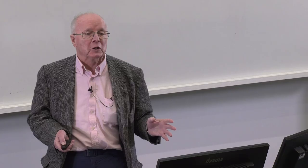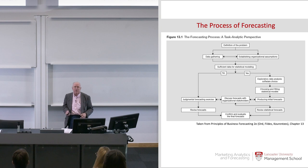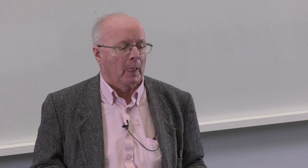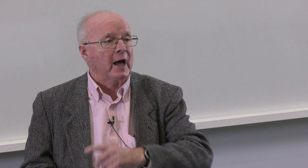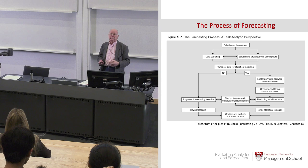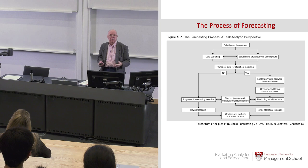People find it very difficult to understand complex methods — that's the simple fact of the matter. This is particularly difficult for machine learning. This slide tries to highlight the circumstances when judgmental methods are used. First, there's the definition of what the problem is — judgment is extremely important here. Almost all strategic forecasting is done through judgmental approaches, usually just somebody saying 'I think we should do that.' There's also a data-gathering component that follows on from the definition of the problem, and then we ask ourselves: is there sufficient data to use a quantitative approach?